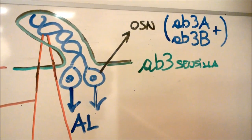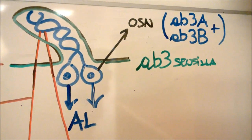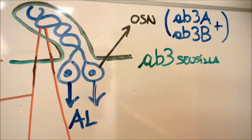For example, AB3 sensilla contain AB3A and AB3B neurons.